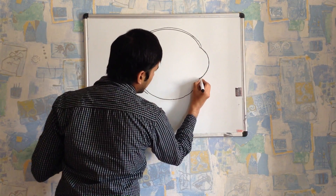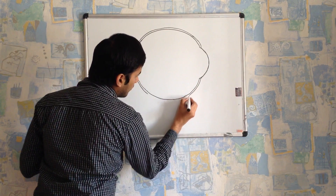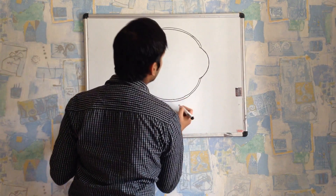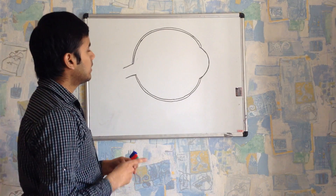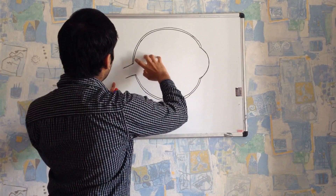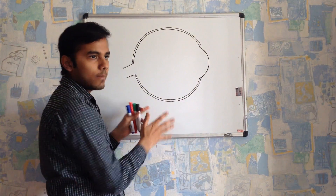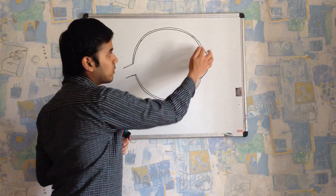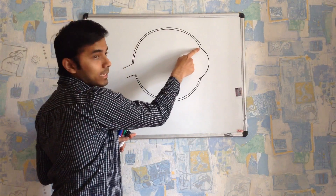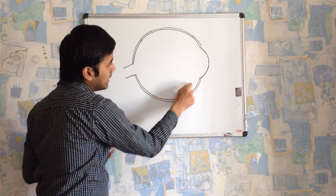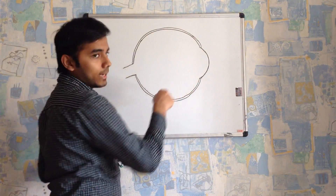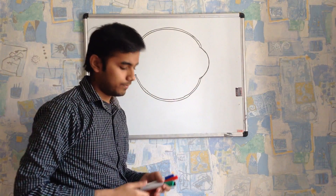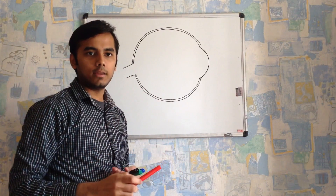Each layer has its own speciality and function. The complete outer layer is called the sclera. Sclera contains two components: the anterior convex component which is transparent in nature, called the cornea, and the posterior non-transparent part. The total sclera has a protective function. We'll move on to the next layer, which is the middle layer.